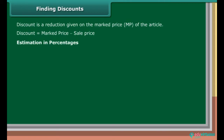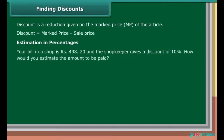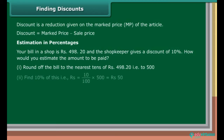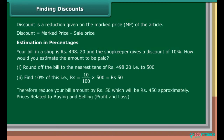Estimation in percentages: Your bill in a shop is Rs. 498.20 and the shopkeeper gives a discount of 10%. How would you estimate the amount to be paid? Step 1: Round off the bill to the nearest Rs. 498.20, that is, to 500. Step 2: Find 10% of this, that is, Rs. 10 upon 100 into 500, which is equal to Rs. 50. Therefore, reduce your bill amount by Rs. 50, which will be Rs. 450 approximately.